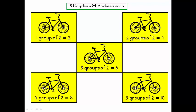So I have five bicycles — five groups. There are two wheels on each, so it's five groups of two, and that equals ten wheels.